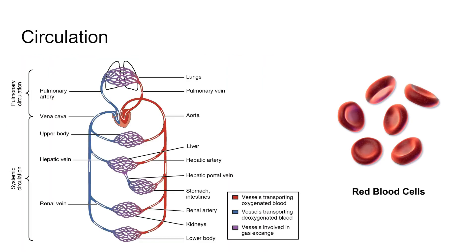Mammal circulation: four-chambered heart, two atria, two ventricles — just like birds. For their red blood cells, they have non-nucleated red blood cells, and so their blood cells do not have a nucleus, which is interesting.